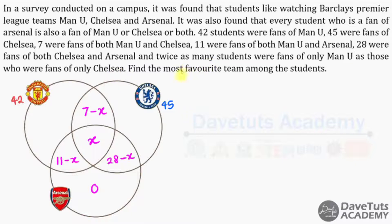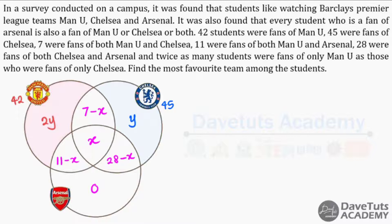If we call the number of students who are fans of Chelsea alone Y, then the number of students who are fans of Man U alone is 2Y. We have now exhausted all the given information. Note that Arsenal-only fans do not exist, and this is the pictorial view of what our Venn diagram looks like.